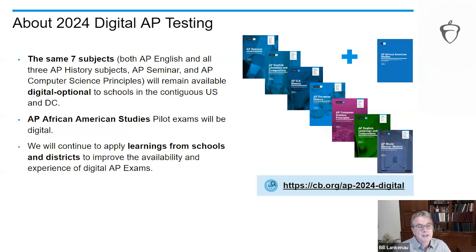For this upcoming year, the digital option is available in those same seven subjects that had a digital option last year, and eligibility is again limited to those 48 states and Washington, D.C. Specifically regarding AP African American Studies: schools approved to participate in this pilot course will administer an operational AP exam and students will receive an official AP score reported to colleges and universities. The AP African American Studies exam is digital format only — paper exams will not be an option. To learn more about digital AP testing, please go to cb.org/ap-2024-digital.